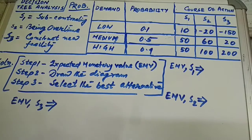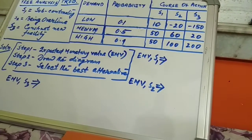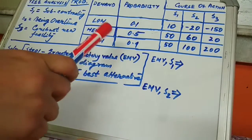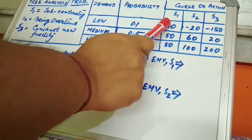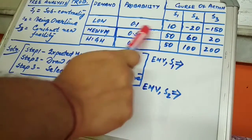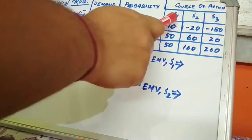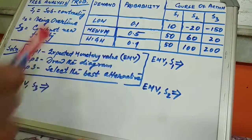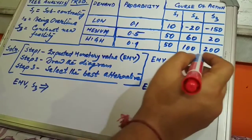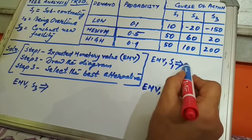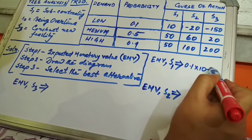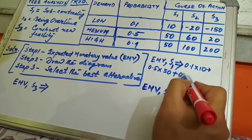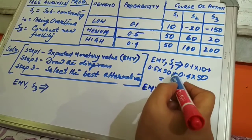For calculating EMV for S1, we multiply the probability with the corresponding values of S1 and sum them up. So for S1: 0.1 into 10, plus 0.5 into 50, plus 0.4 into 50. This gives a value of 46.